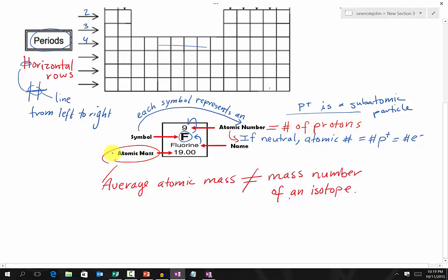Lastly, we have the atomic mass of an element. Now, this is also known as the average atomic mass of an element. This is not the same thing as your mass number of an isotope, which we will cover later. Because the mass number of an isotope is equal to the number of protons plus the number of neutrons only, specifically for the isotopes.